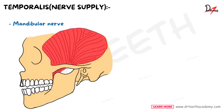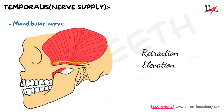Its nerve supply is from the temporal branch of the mandibular nerve. Its action is the same as the masseter muscle — retraction and elevation of the mandible. Remember, all muscles of mastication elevate the mandible — that is, they close the mandible — except the lateral pterygoid muscle, which opens or depresses the mandible.